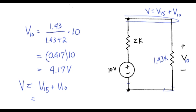So recalling the result from previous step, we had V15 equal to 2.50 volts plus V10 equal to 4.17 volts, giving us a final answer of 6.67 volts.